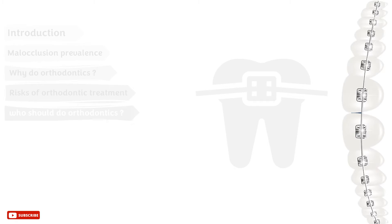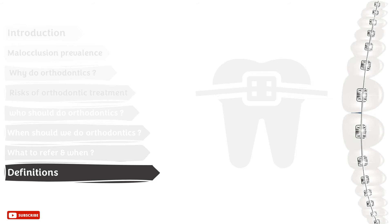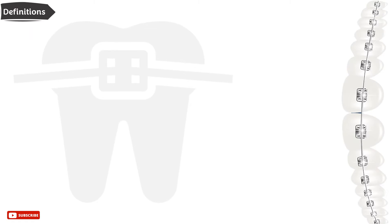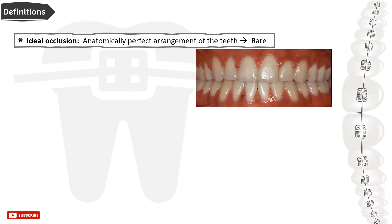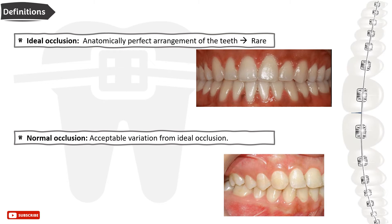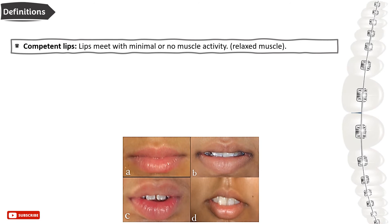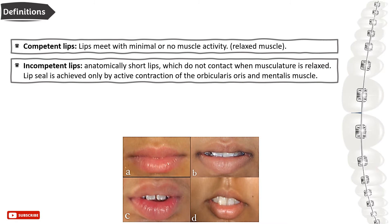Now let's look at some common definitions in orthodontics. Ideal occlusion is an anatomically perfect arrangement of teeth, which is rare to occur. Normal occlusion is an acceptable variation from ideal occlusion. Competent lips meet with minimal or no muscle activity, so the lips are sealed with the muscles relaxed. Incompetent lips are anatomically short lips that do not contact when the musculature is relaxed.